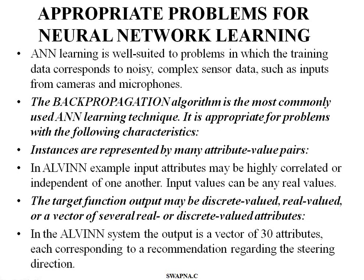First characteristic: instances are represented by attribute-value pairs. In the ALVIN autonomous vehicle example we saw in the last video, instances are represented by many attribute and value based characteristics. Input attributes may be highly correlated or independent of one another, and input values are real values.